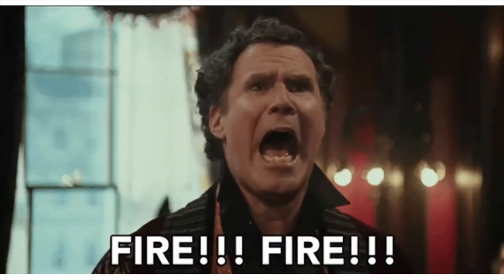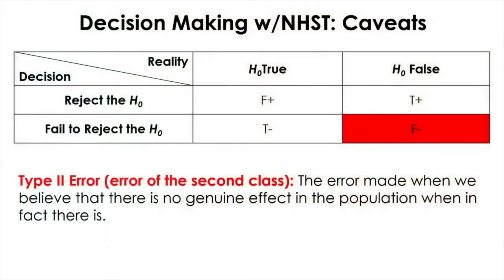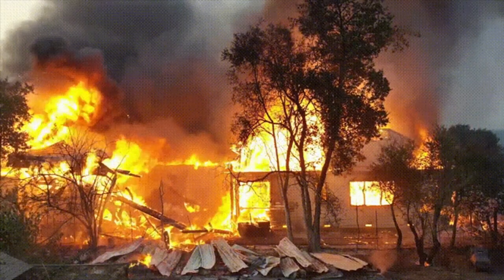The alarm goes off even though there is no fire. On the other hand, if you fail to reject the null after running NHST, but when in fact the null is false, then you just made an error called Type 2 error. This is when you claim that there is nothing when in fact there is something — the alarm doesn't go off when there is fire.